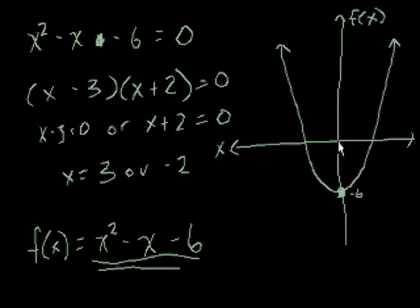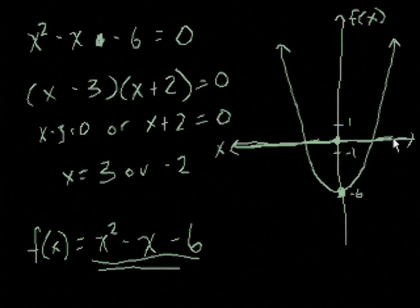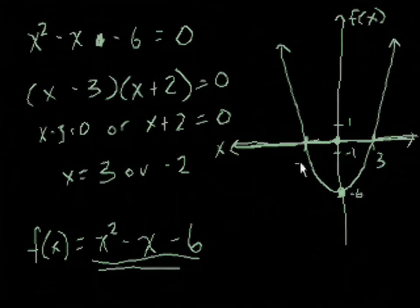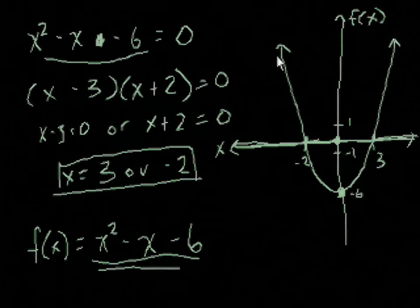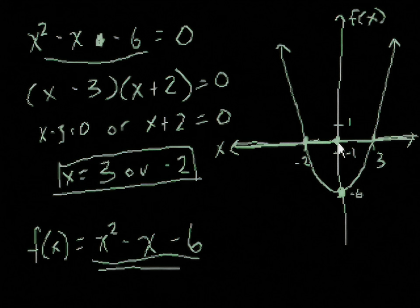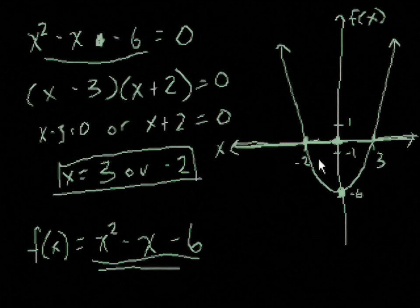We know that when f of x equals 0, that's along the x-axis. And we know it equals 0 at the points x equals 3 and x equals negative 2 — that's what we solved by factoring. When we set f of x equal to 0, we're asking when does this function equal 0. Those x values are also called the zeros or the roots of f of x.